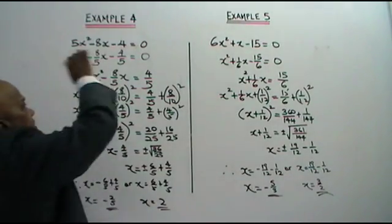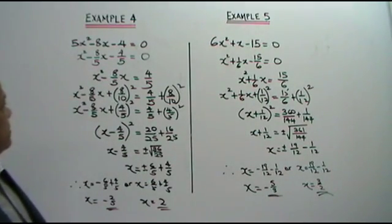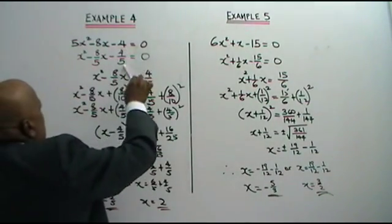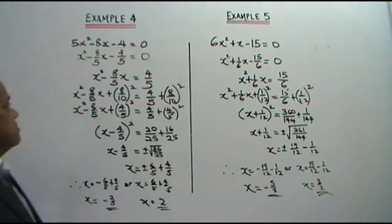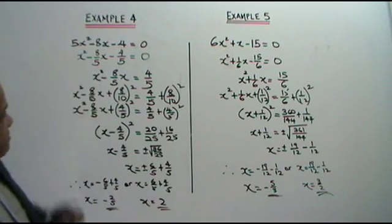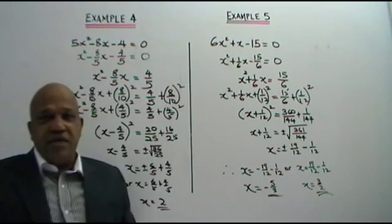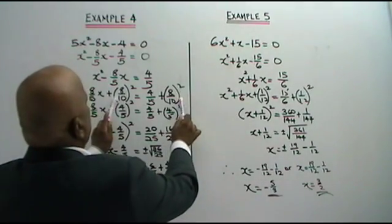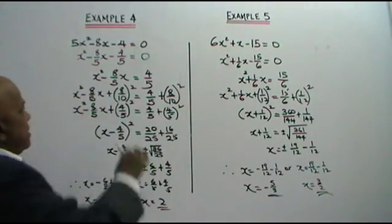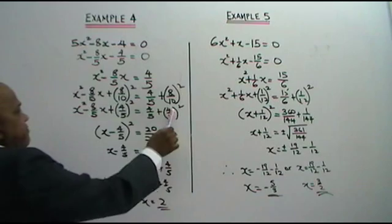Step 1: divide all by 5. So you get this step. Now, negative 4 over 5, bring to the right. Now you take the number 8 over 5, divide by 2, square it, and add to both sides of the equation. You get 8 over 10. Next, now you have completed the square. You simplify 8 over 10 and get 4 over 5.